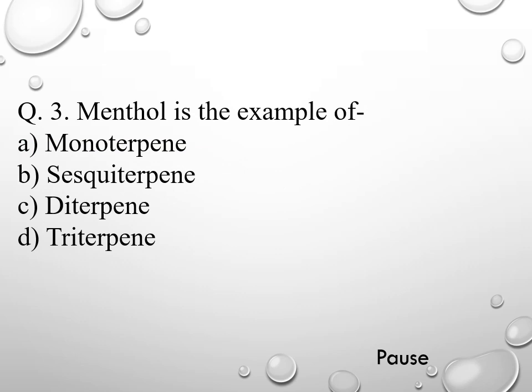Question 3. Menthol is the example of: option A monoterpene, option B sesquiterpene, option C diterpene, and option D tricyclic monoterpene. The right answer is sesquiterpene. So menthol is the example of sesquiterpene.